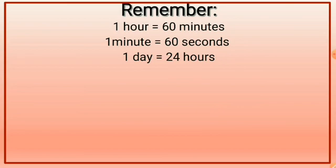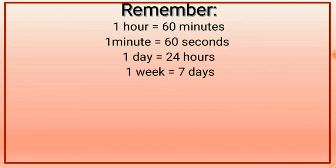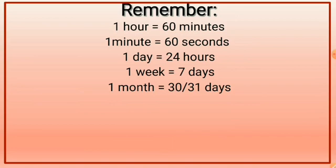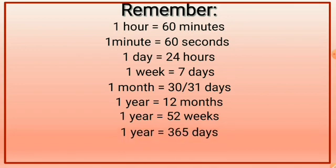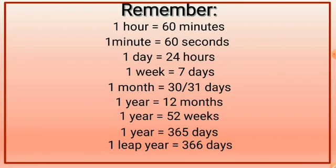And in a week, 7 days make a week. How many days are there in a month? Some months have 30 days and some months have 31 days. And 12 months make a year. How many weeks are there in a year? There are 52 weeks. And in a year, usually we have 365 days. But there is a year which is known as leap year — in a leap year, we have 366 days.